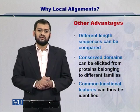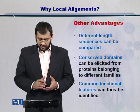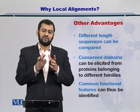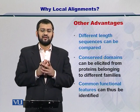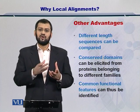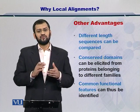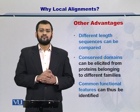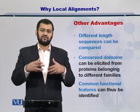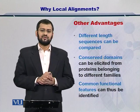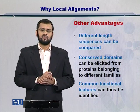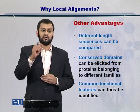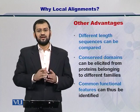Besides domain shuffling, there are several other advantages of local alignments. Local alignments allow you to compare sequences of variable length. For global alignment you need to have two sequences that are exactly the same in length, but local alignments are very useful in comparing sequences that are different in length. Moreover, you can easily identify conserved domains between various sequences. And if you know some domains are conserved within two sequences, then you can expect that their function will also be the same, because domains dictate the function of proteins.